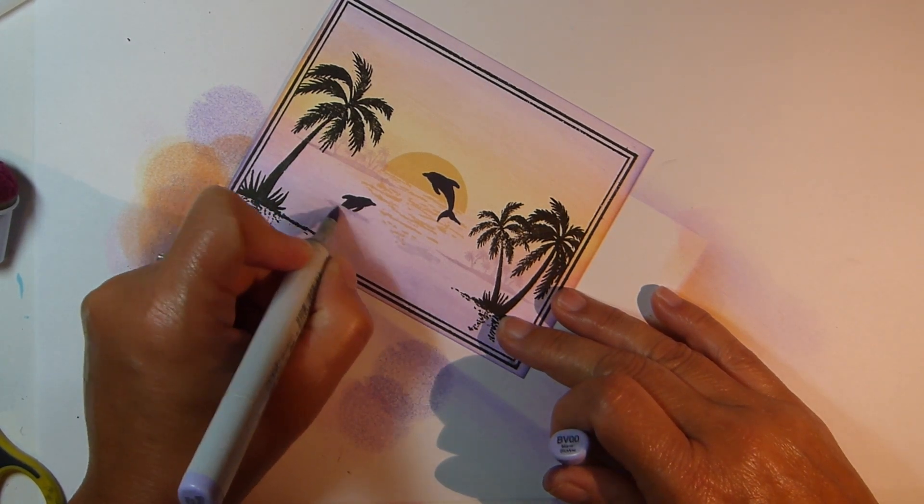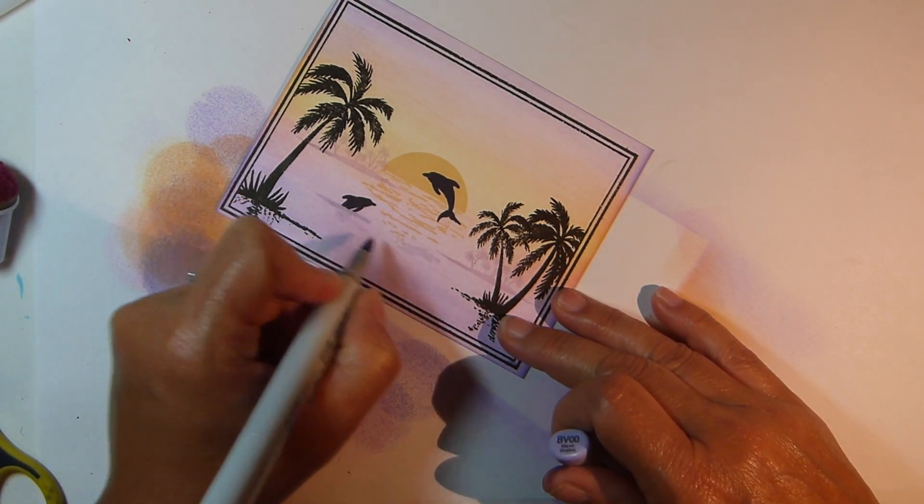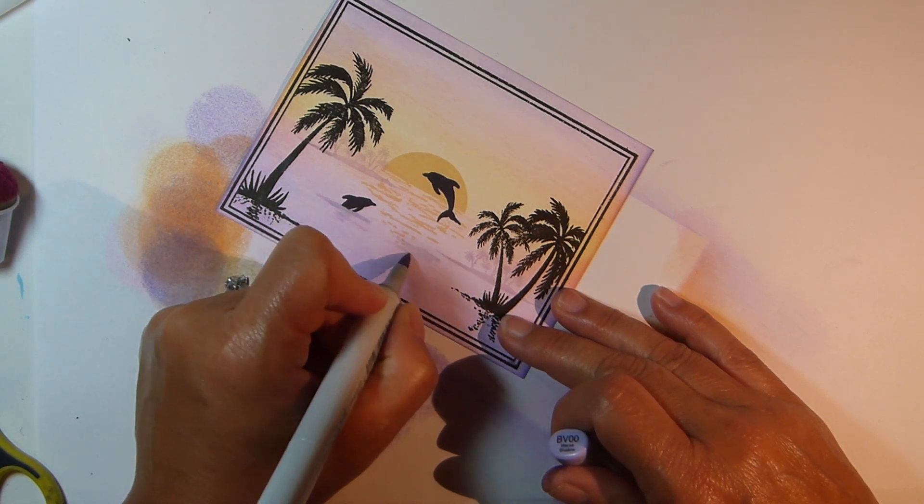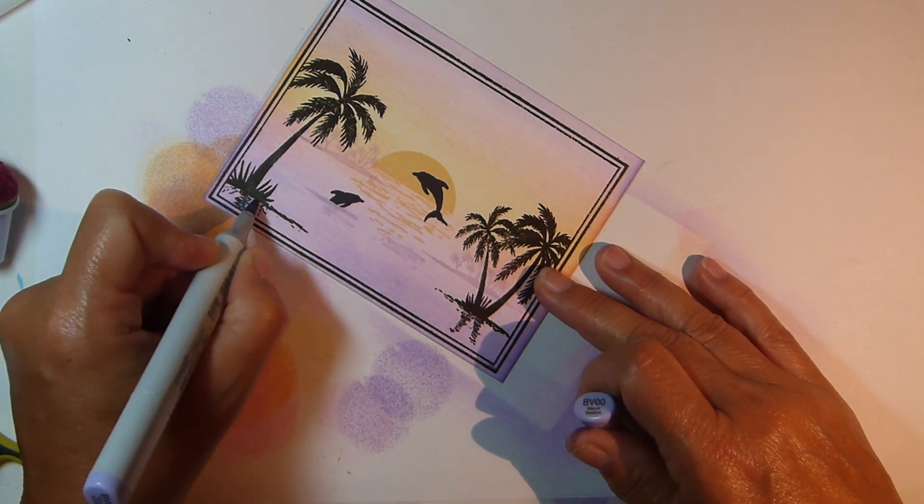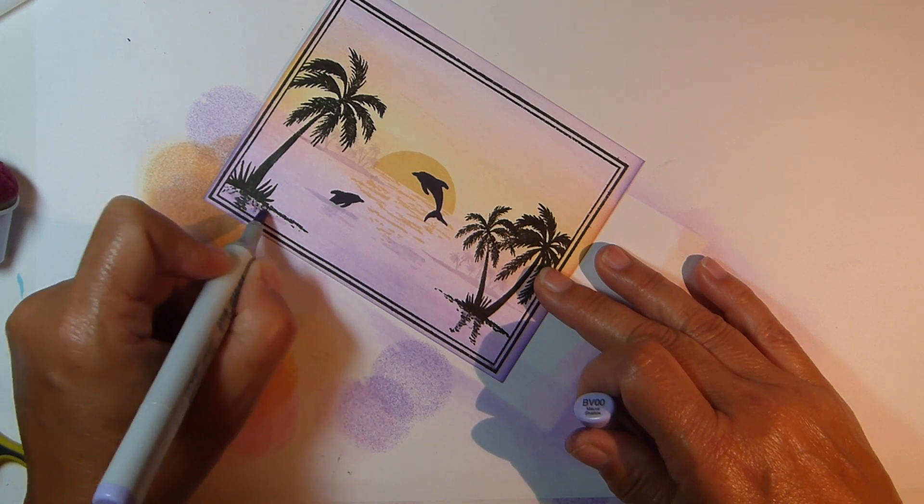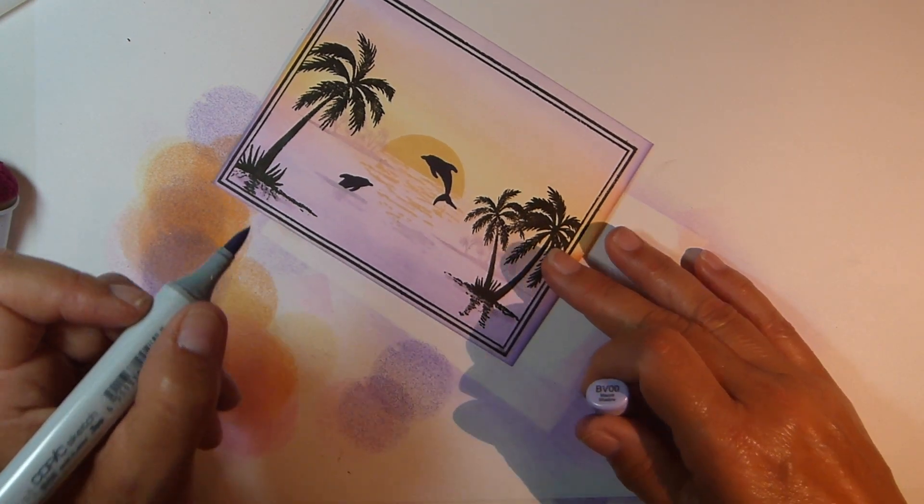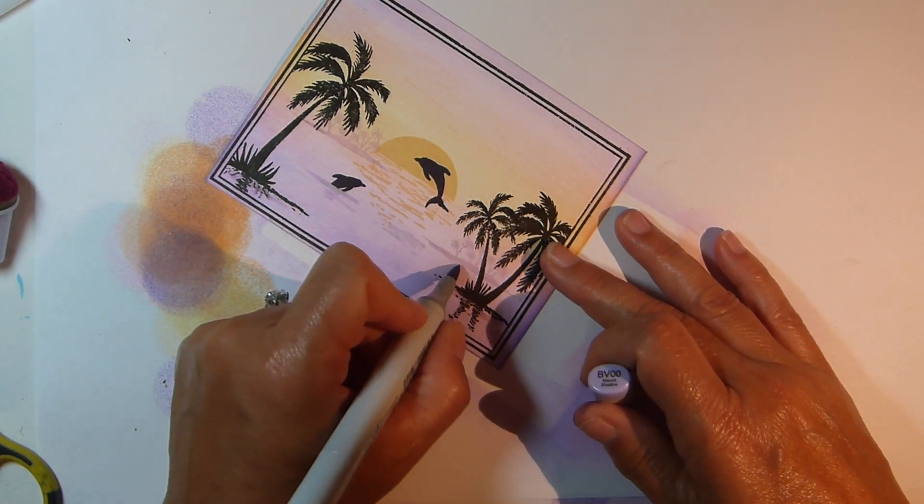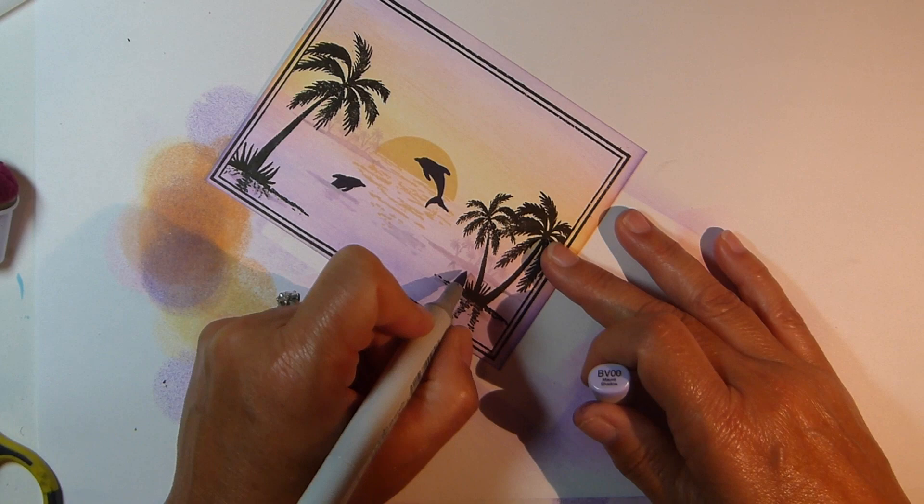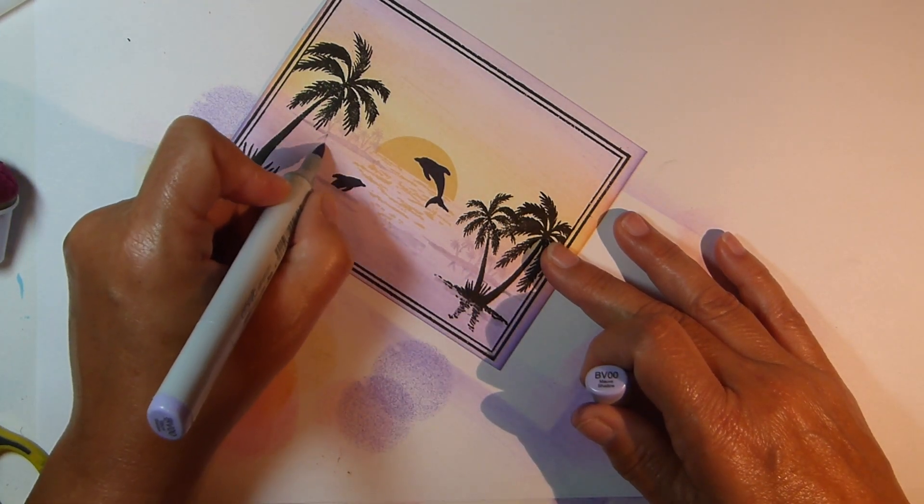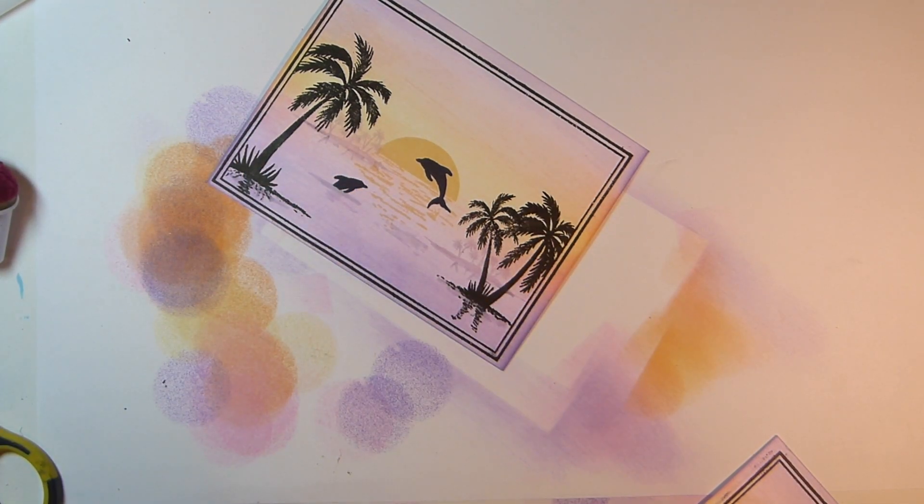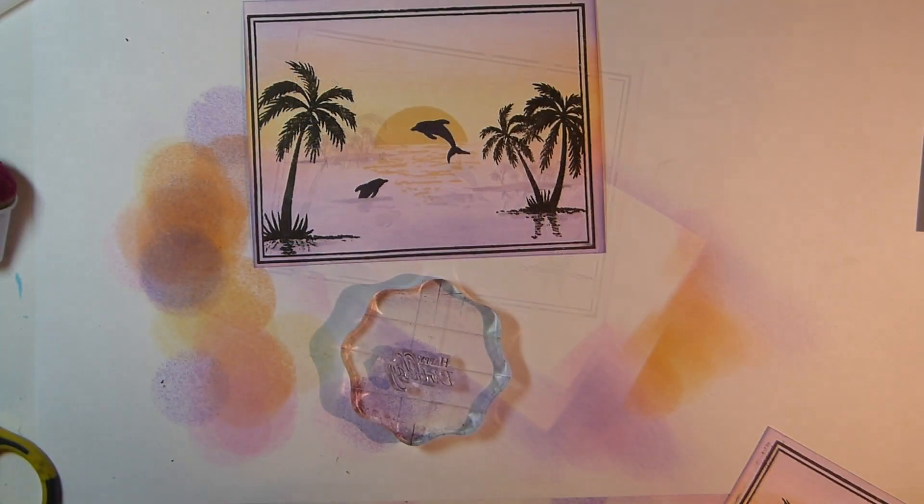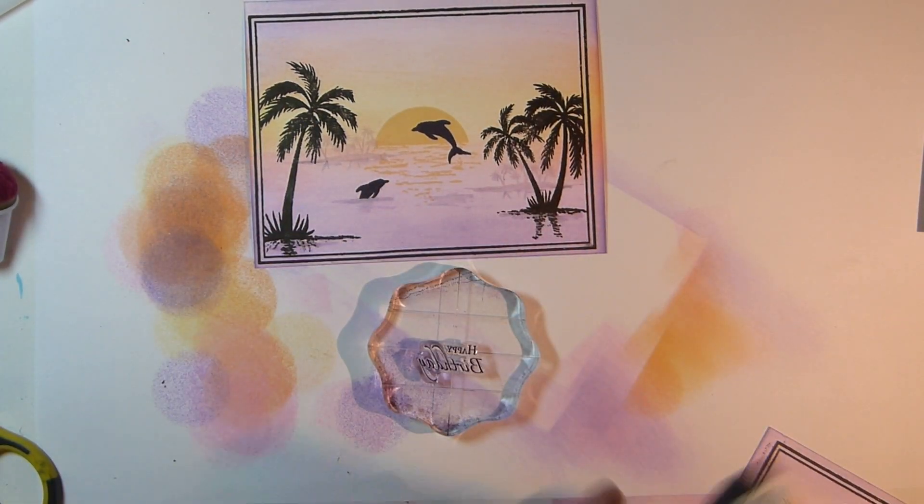Use Copic marker BV00 to add in some shadows for the dolphins and for the islands. Stamp the sentiment, also from the Framescapes Tropical Skies stamp set, using Gina K Black Onyx ink.